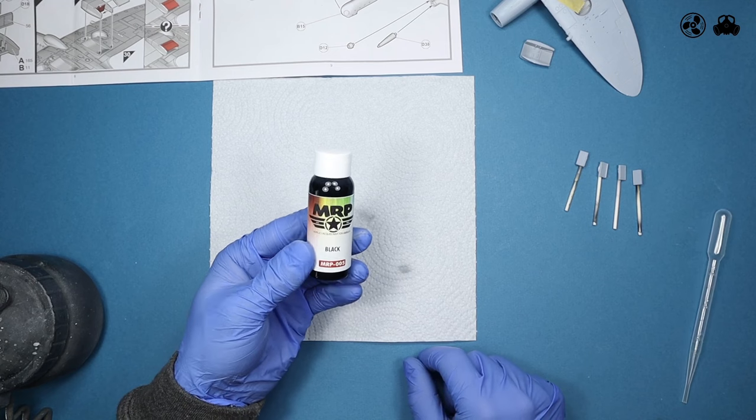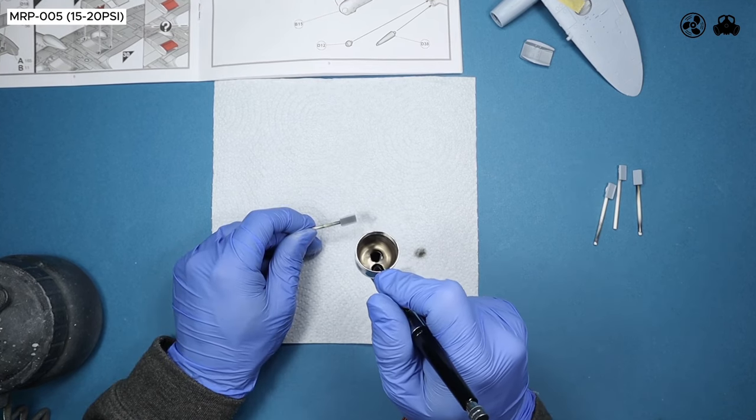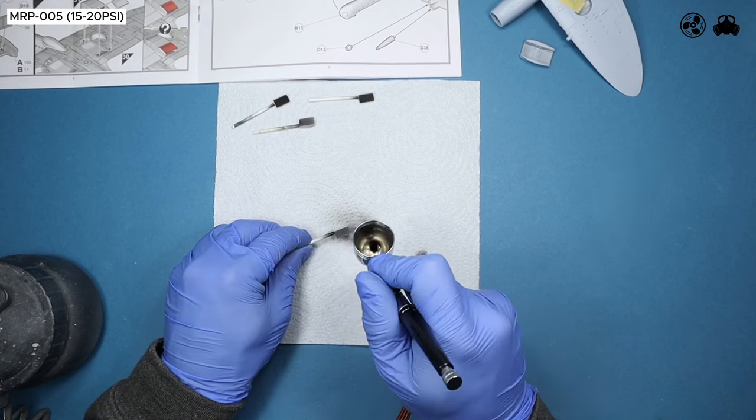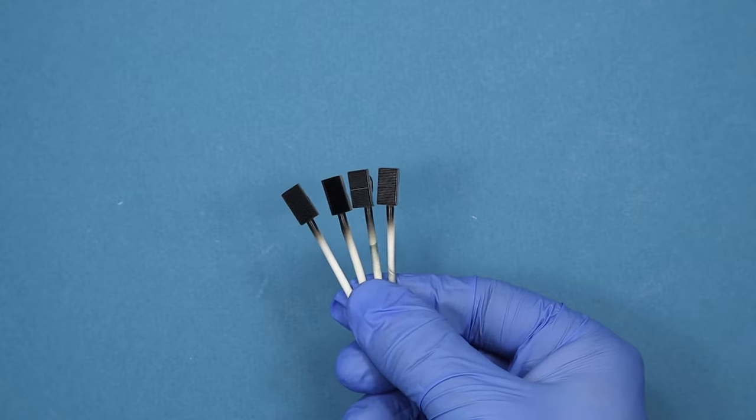Now onto the black for the grills, using MRP005 again directly onto the plastic. The grills only need to be painted on the textured face. Also, avoiding the sides will stop the paint from affecting their fit.